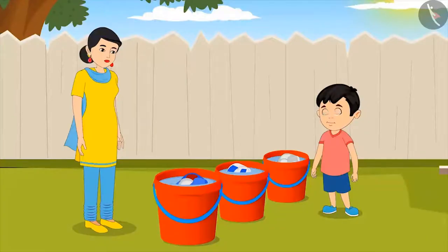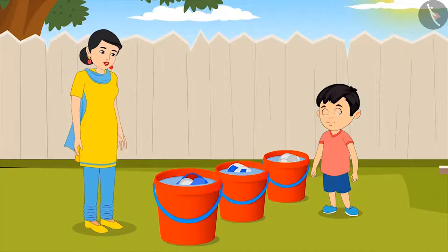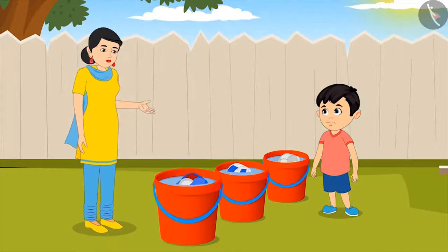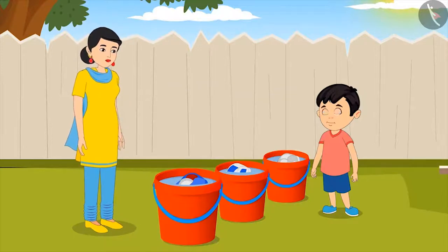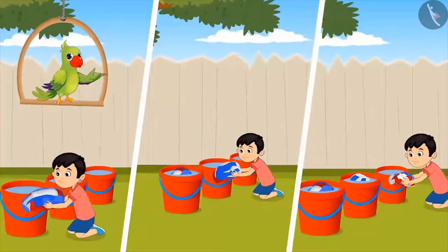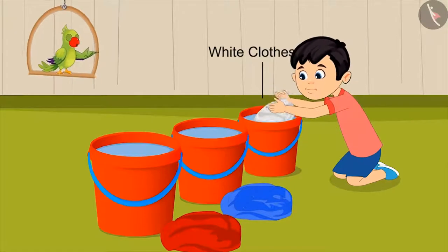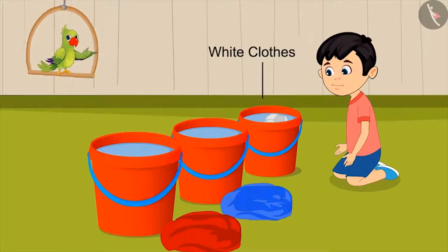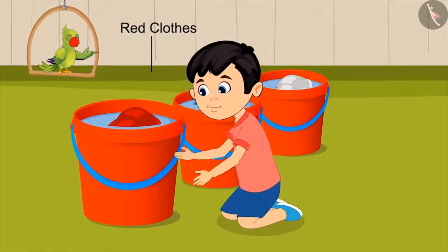'Mom, why are you laughing? Did I do something wrong?' 'Yes son, I had asked you to separate all the clothes on the basis of their color, but you have separated them based on their types.' 'Oh, let me do it correctly now.' Chotu takes all the clothes out of the buckets and then puts all the white clothes in one bucket, blue clothes in the second bucket, and all the red clothes in the third bucket.